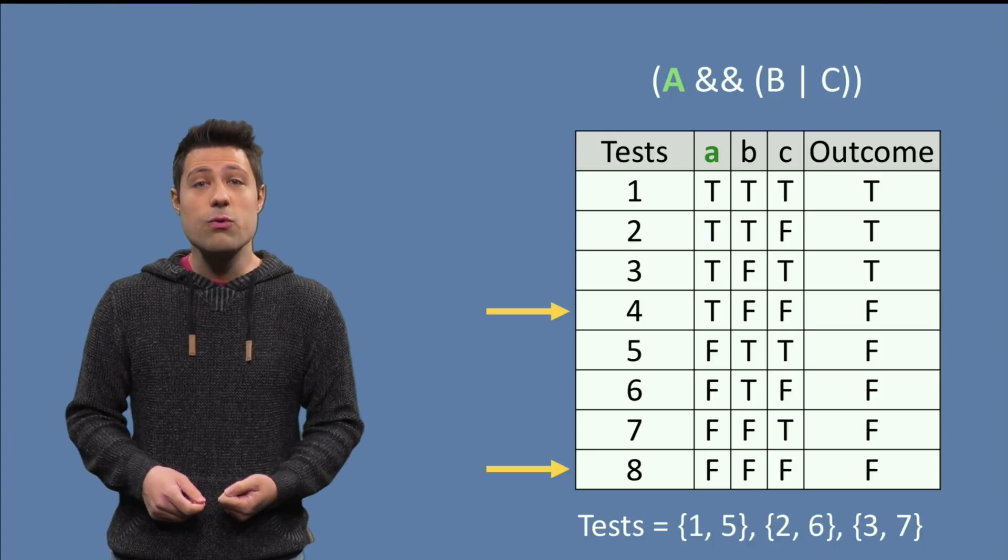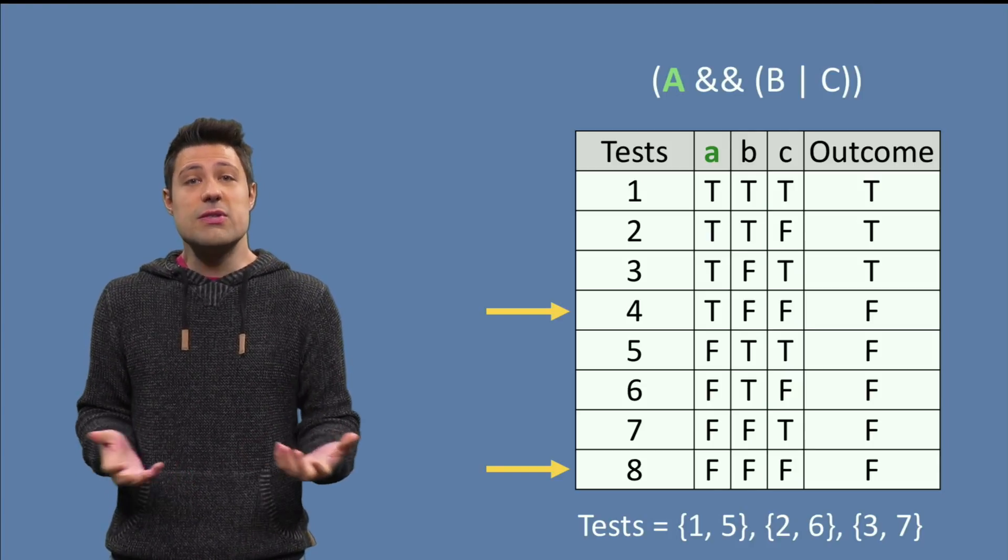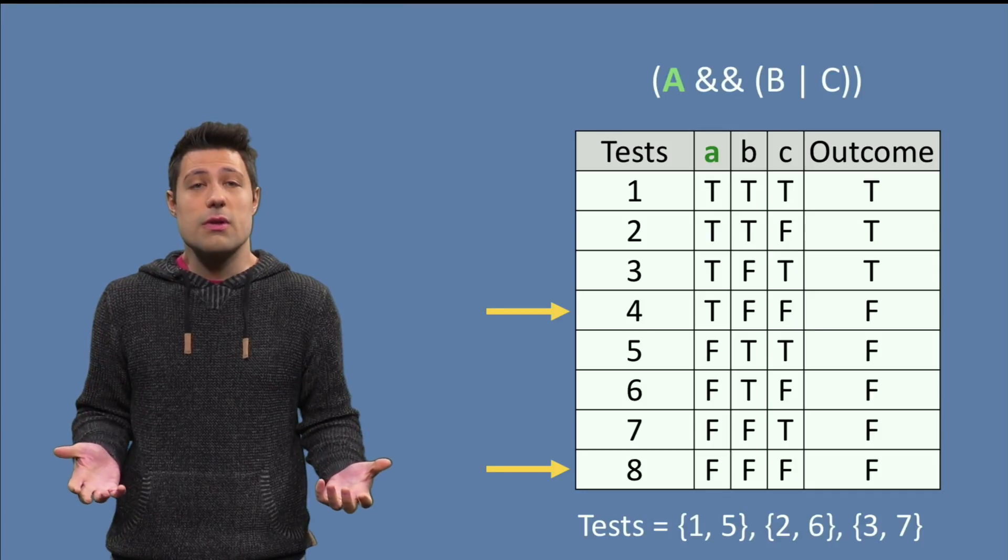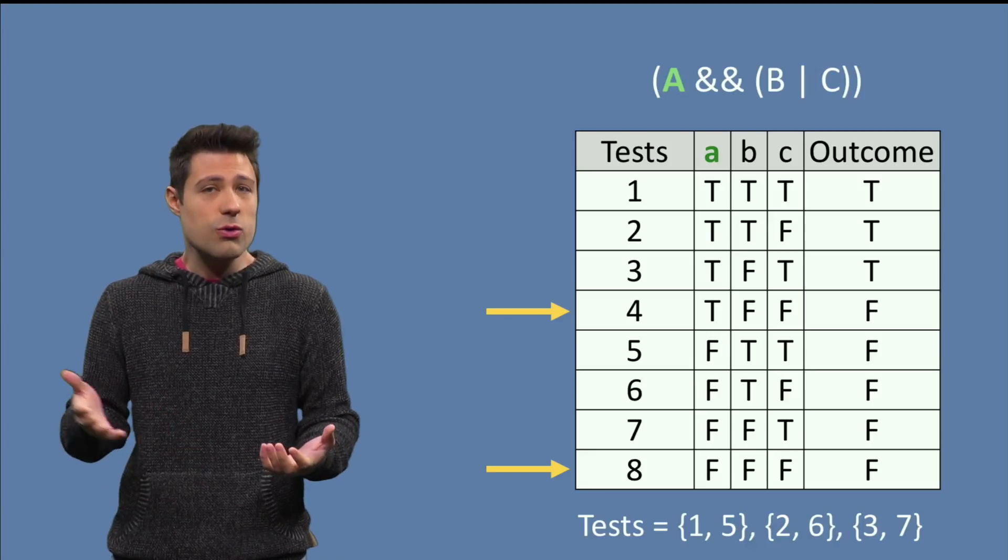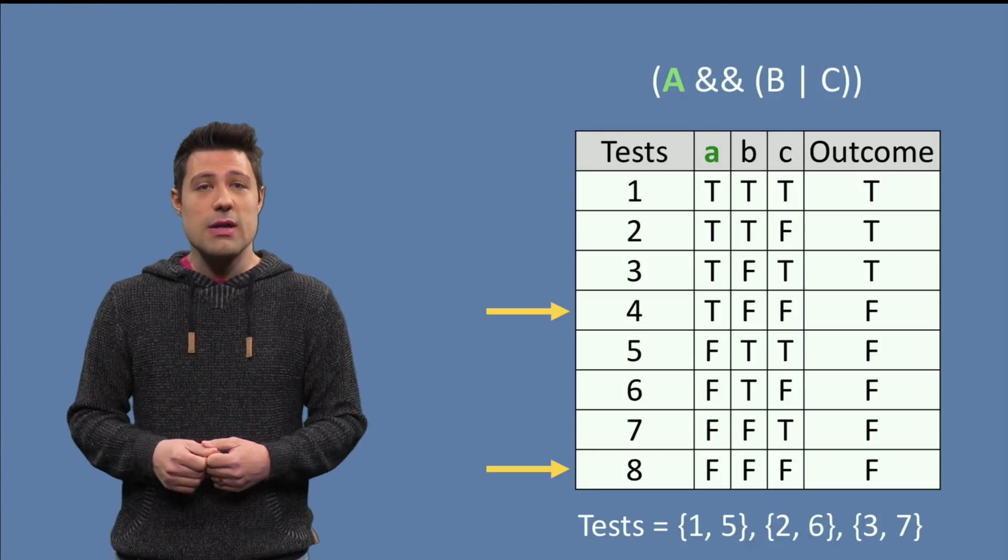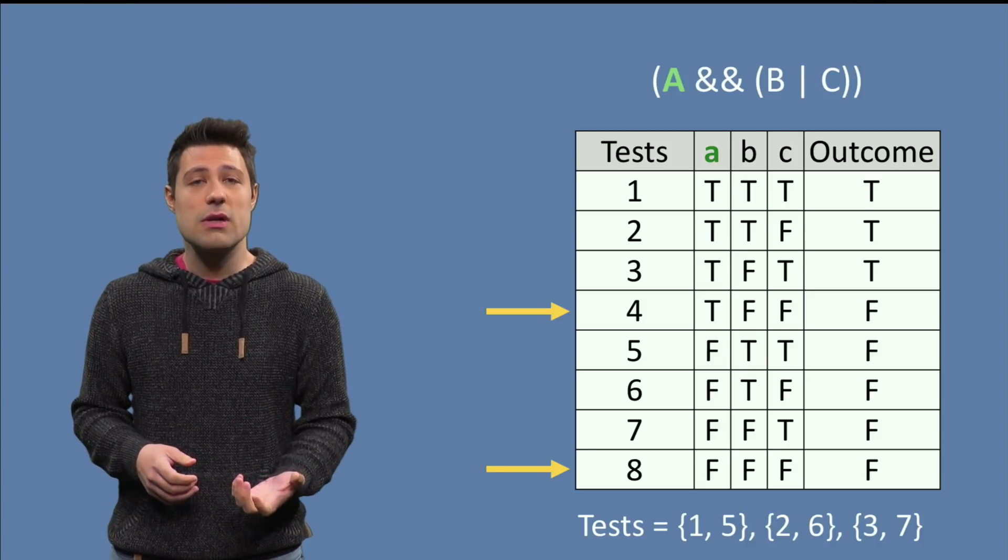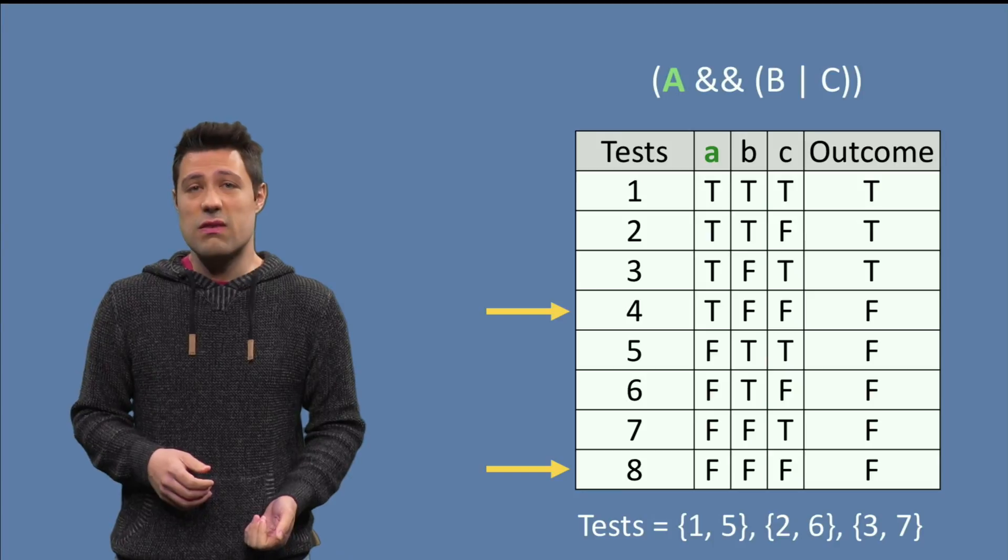Now, for row 4, its counterpart is row 8, but the outcome is the same, both are false. So, this means that A, in regards to test 4, true, false, false, and to test 8, false, false, false, does not independently affect the outcome. In other words, for A, these two tests are not that interesting.